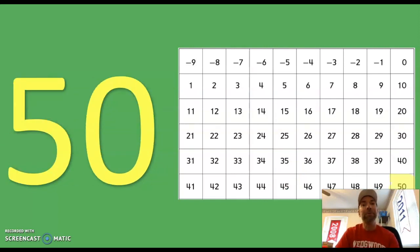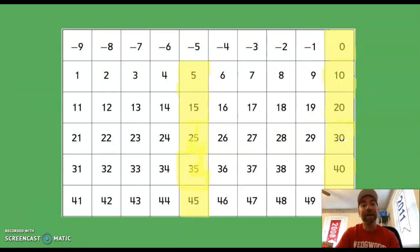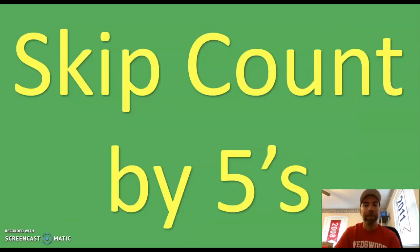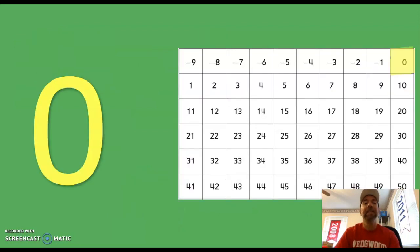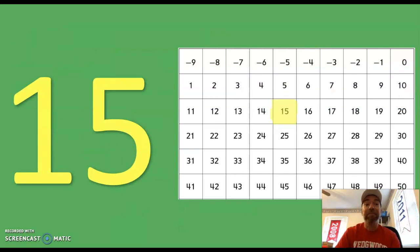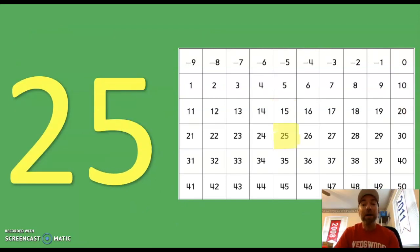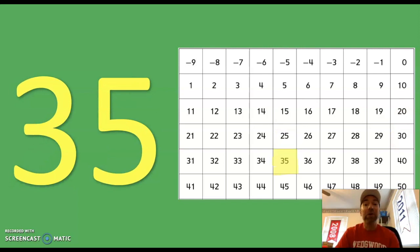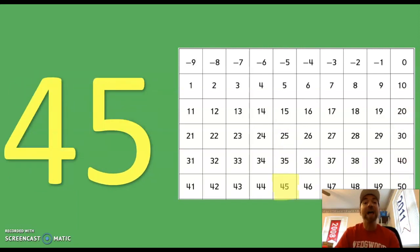I wonder if you can even count by fives past 50 — that would be amazing! When I count by fives, look what happens to my number grid this time. Again, I see a really cool pattern. Let's practice counting by fives one more time. Here we go, skip count by fives starting at zero and stopping at 50: 0, 5, 10, 15, 20, 25, 30, 35, 40, 45, 50.